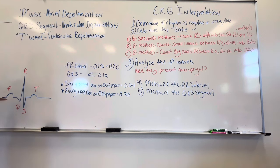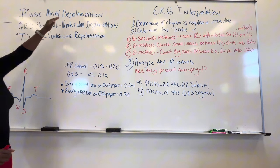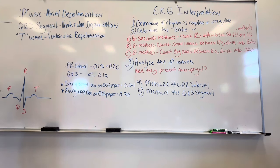Now let's look at what each of these represent. The P wave on the EKG represents atrial depolarization. When we say depolarization, we're referring to contraction. So atrial depolarization is what the P wave represents. The QRS segment is the ventricular depolarization. And then the T wave represents ventricular repolarization.